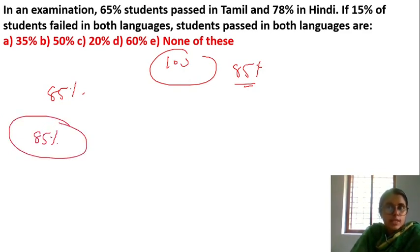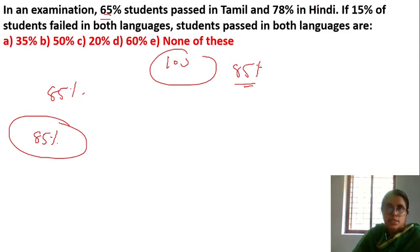In Tamil and Hindi, students passed in both languages. 65% and 78% are added together.